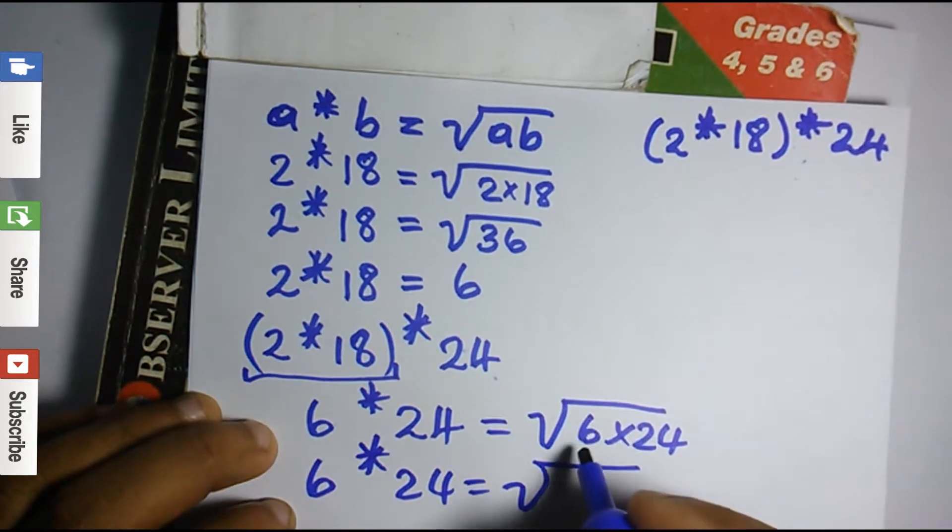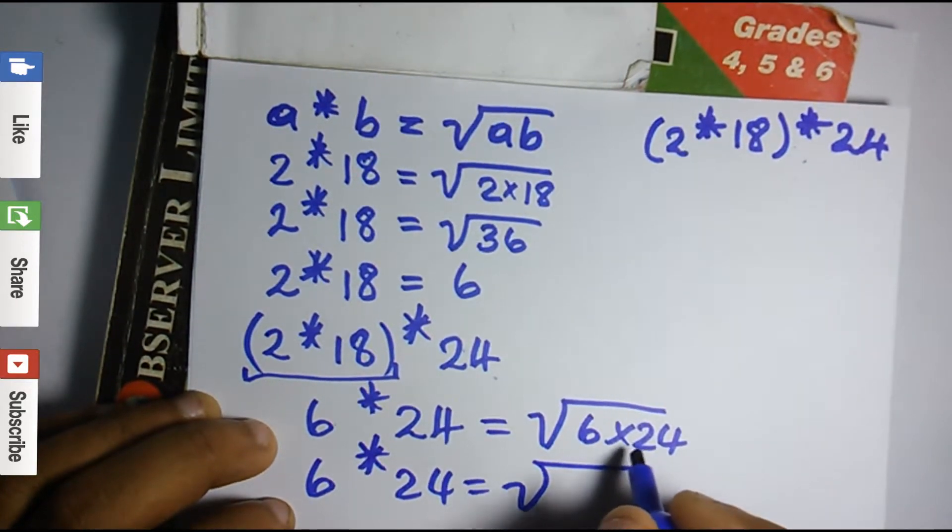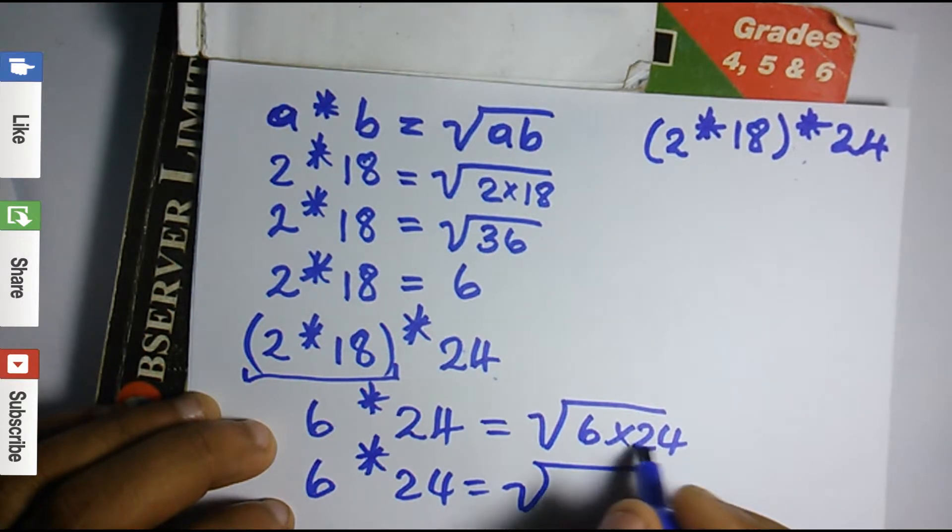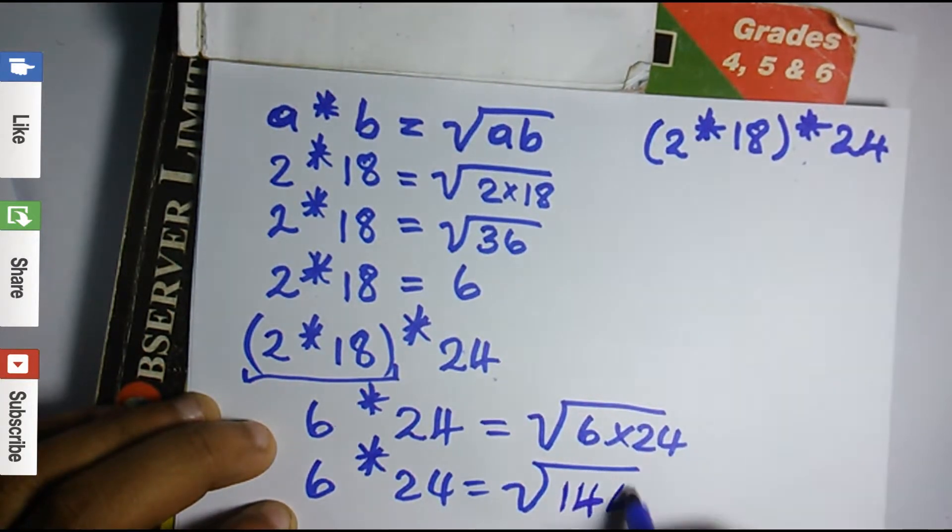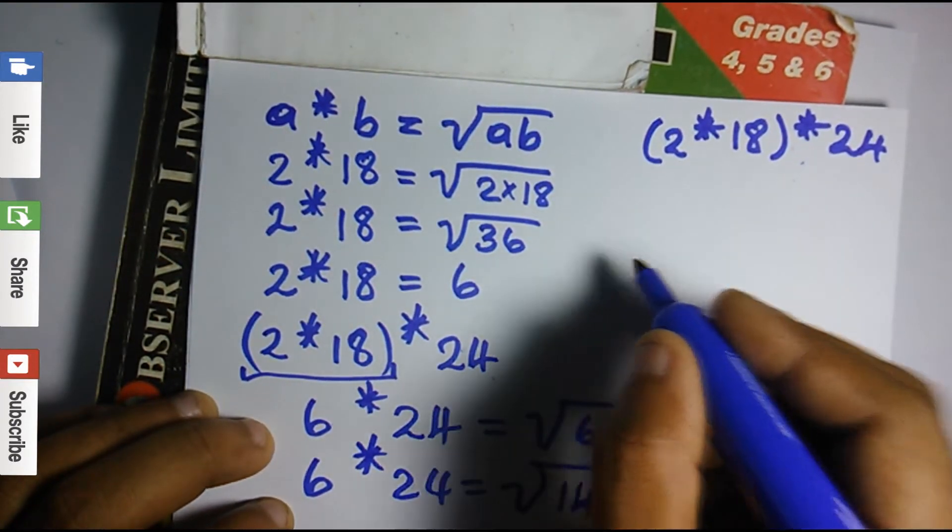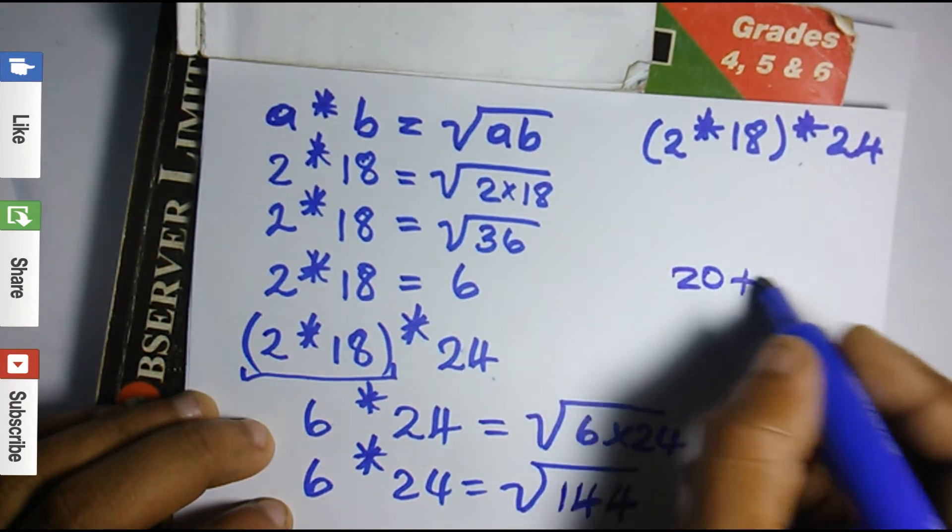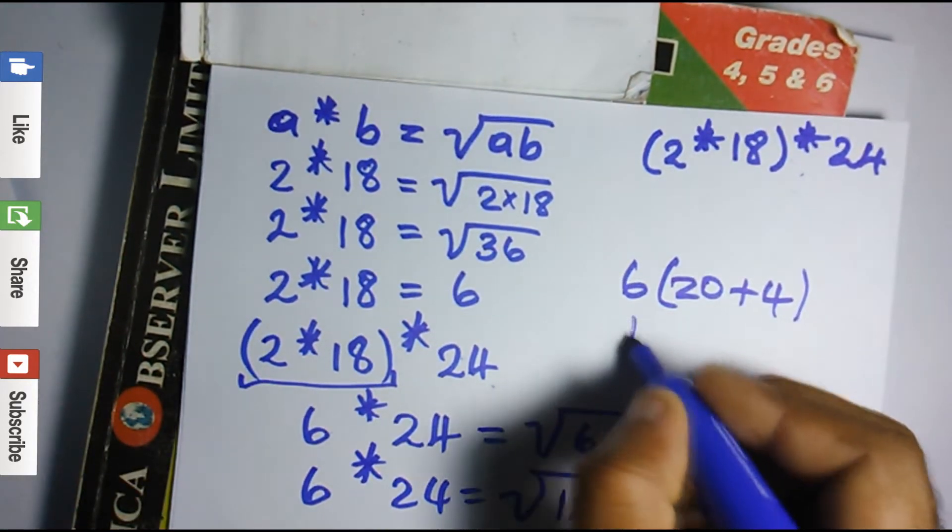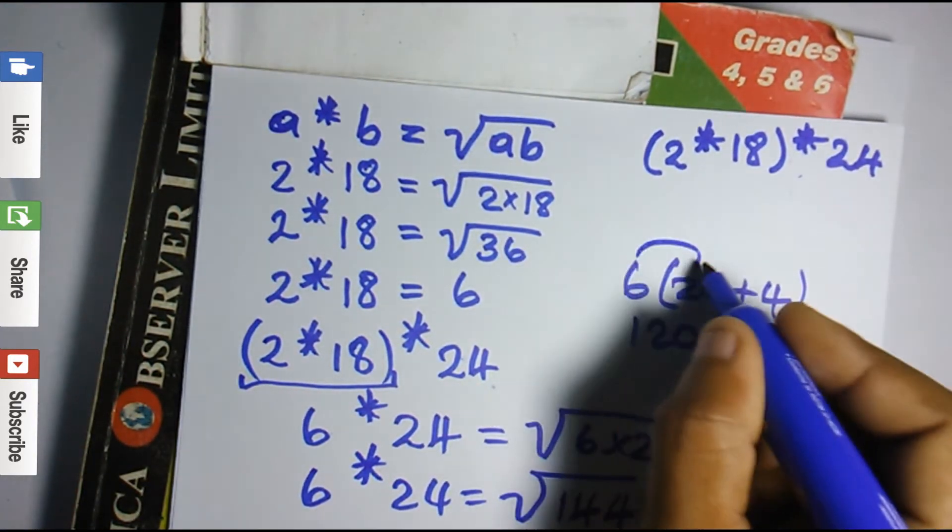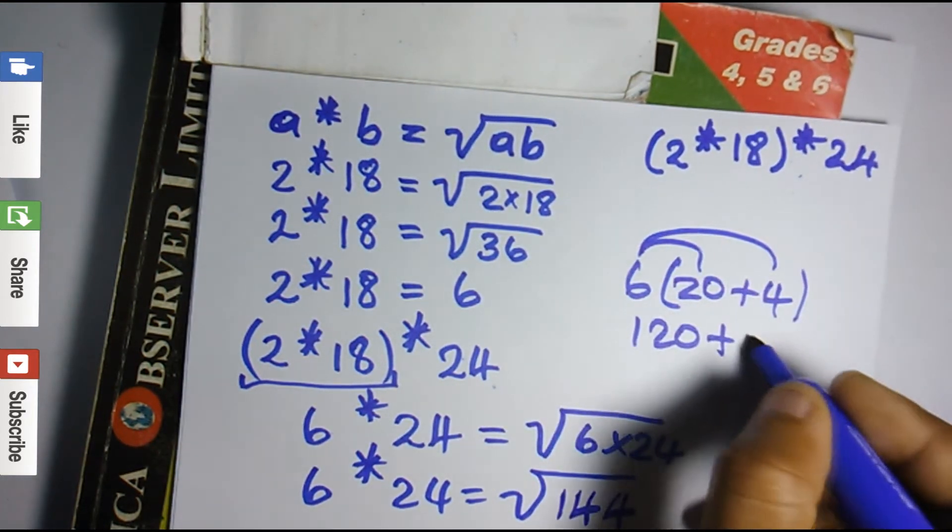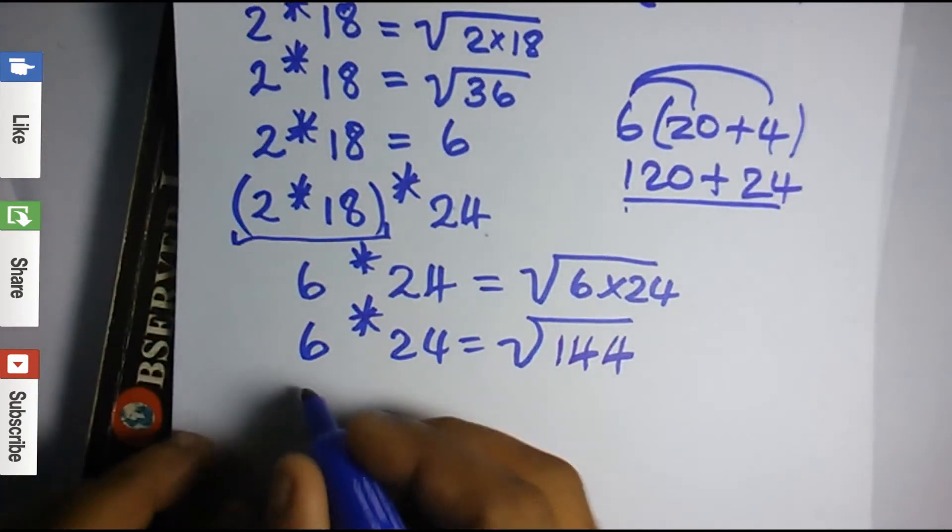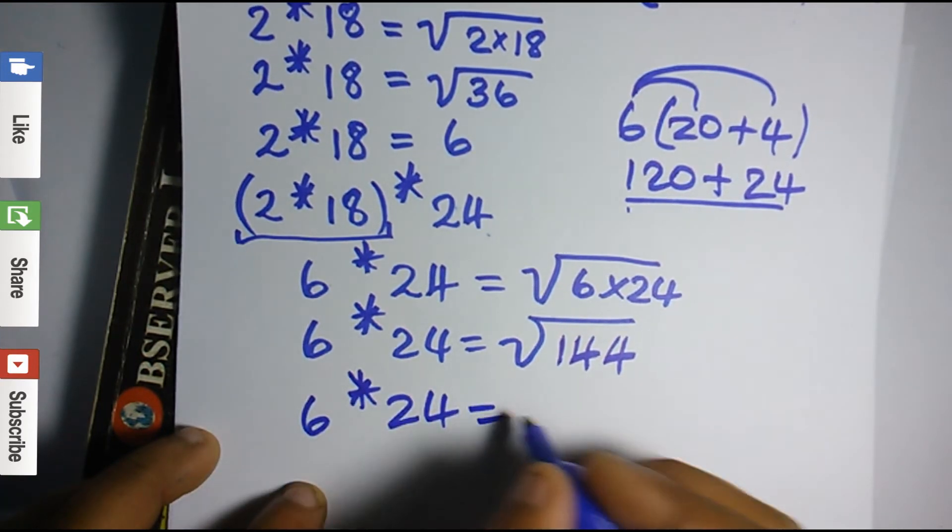So 6 asterisk 24 equals the square root of 6 times 24. 6 times 20 is 120, 6 times 4 is 24, so that's 144. What I did is split 24 into 20 plus 4, and then apply distributive law. So 6 times 20 is 120, plus 6 times 4 is 24. So when you add these, you get 144.